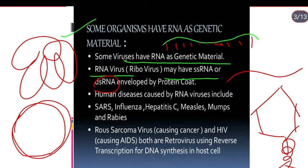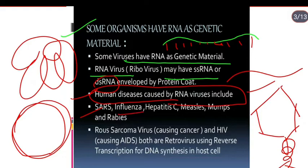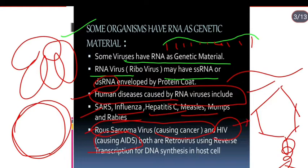Human diseases caused by RNA viruses include SARS virus, influenza, hepatitis C, rabies, and AIDS. These are all caused by RNA viruses. Rous sarcoma virus causes cancer, and HIV is a retrovirus.